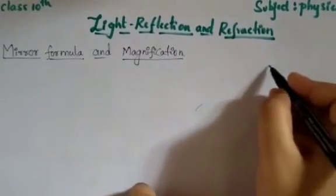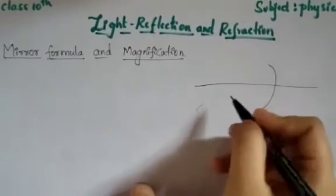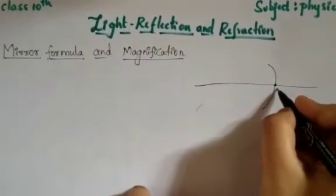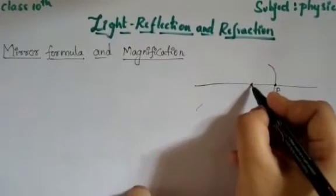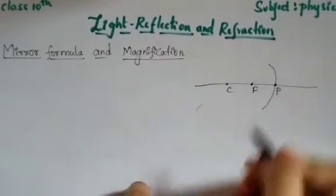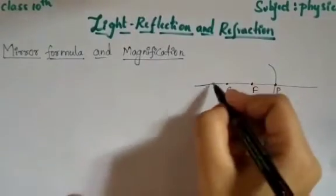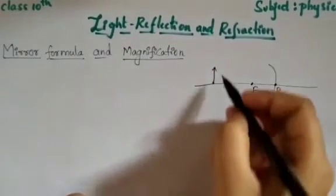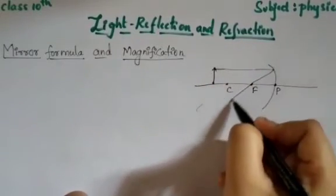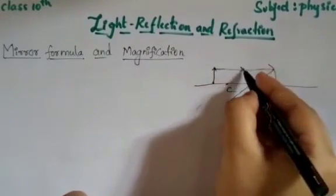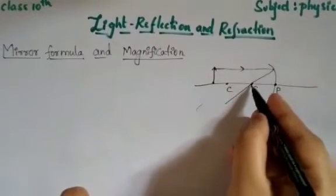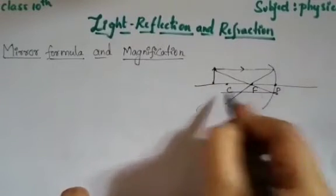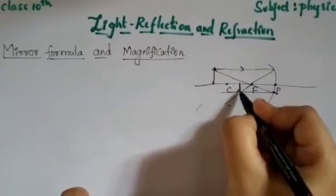To find the mirror formula, I will consider a concave mirror. In the case of a concave mirror, this is the pole — the center or origin. This is the principal focus and this is the center of curvature. I will take an object here. One ray incident parallel to the principal axis passes through the principal focus; one ray through the principal focus reflects parallel.